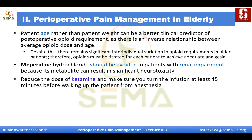Meperidine — also called pethidine — should be avoided in patients with renal impairment because its metabolites tend to accumulate. We should also reduce the dose of ketamine and make sure to turn it off with enough time before the end of anesthesia if we want to wake the patient up at the end of surgery.